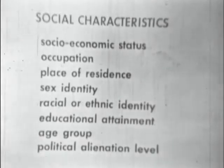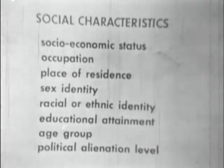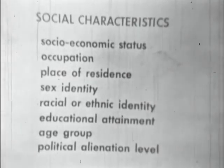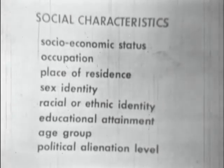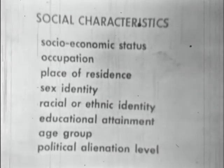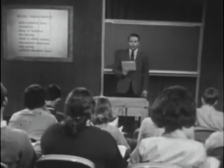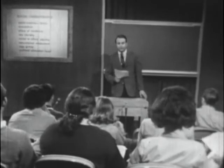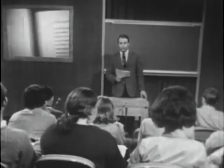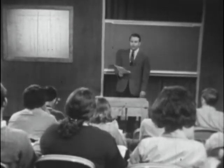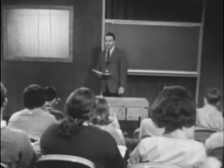Socioeconomic status, occupation, place of residence, sex identity, racial or ethnic identity, educational attainment, age group, and political alienation level. Now we're going to look at three statistical tables from which you will infer generalizations using those social characteristics.